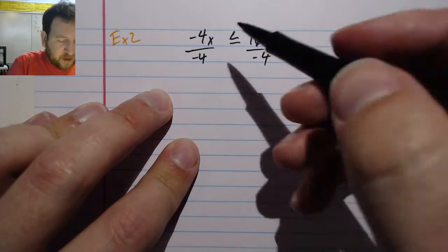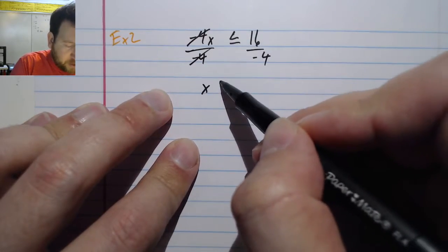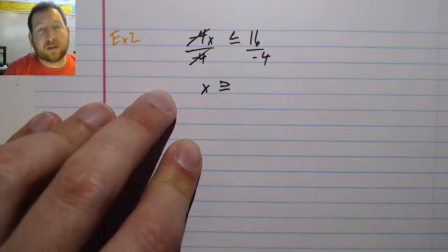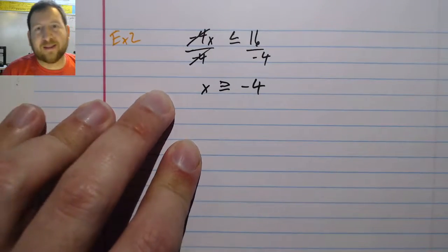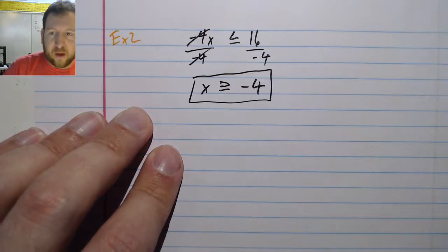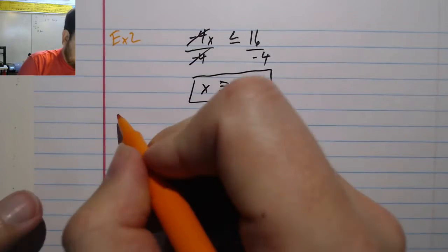And again, I need to flip my inequality when I do this. So I'm going to write x is greater than or equal to 16 divided by negative 4. 16 over 4 is 4, but one of them is negative, so it stays negative. So I have x is greater than negative 4. Let me find one more for our last example.